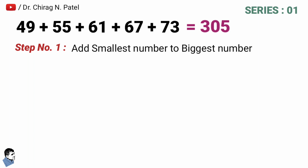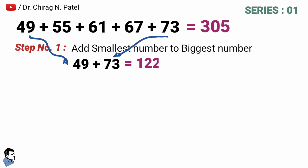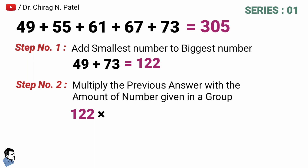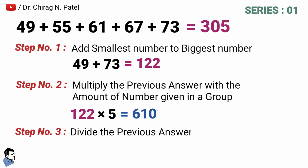Step 1: Add the smallest number to the biggest number in the series — that means 49 + 73 = 122. Step 2: Multiply the previous answer by the total count of numbers in the group. There are five numbers, so 122 × 5 = 610. Step 3: Divide the previous answer by 2 — that means 610 ÷ 2 = 305. That's the right answer.